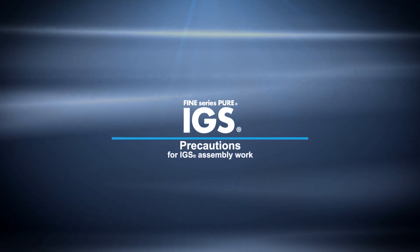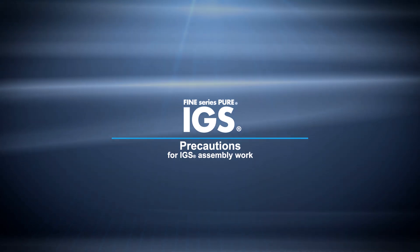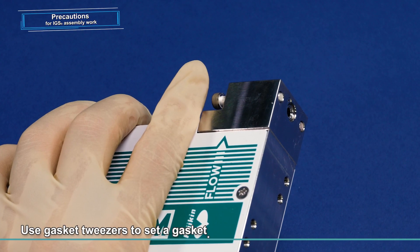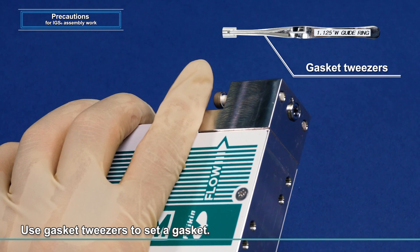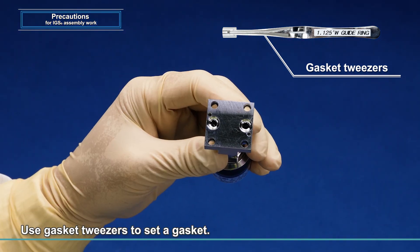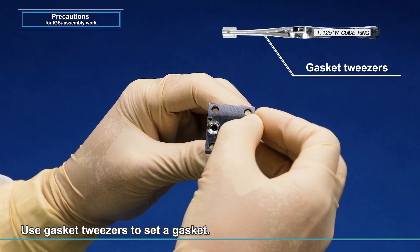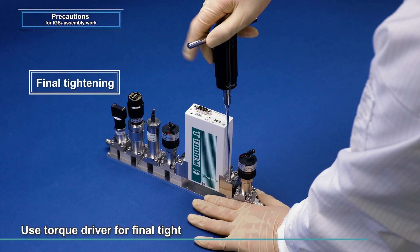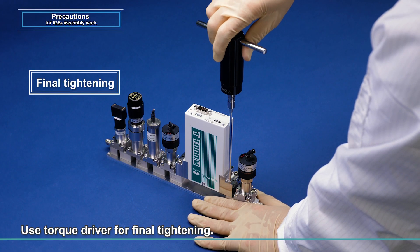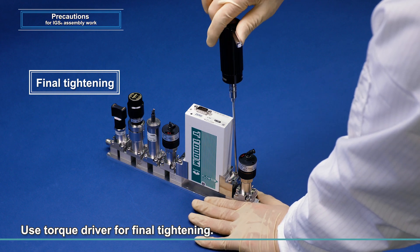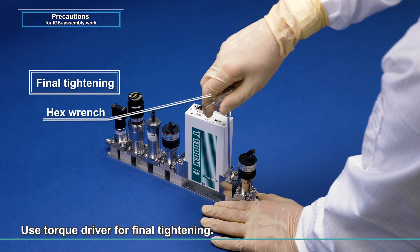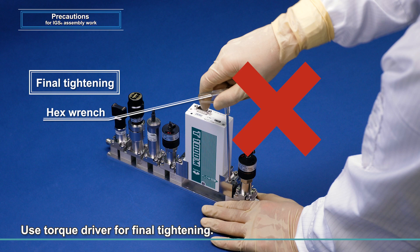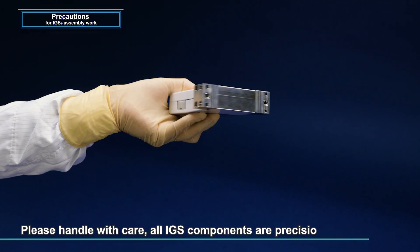Precautions for assembling an IGS: When you set a gasket, please use gasket tweezers. Please do not pick up and set the gasket by hand. To fully tighten the fasteners, be sure to use a torque driver controlled to be at the specified tightening torque. All IGS components are precision devices requiring utmost care in handling.